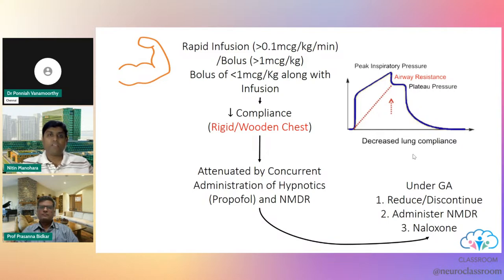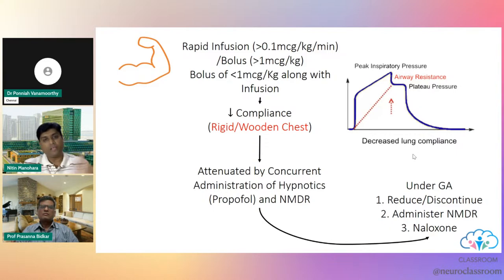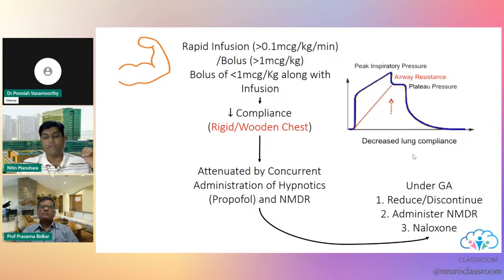One more important property: when you start remifentanil infusion and go higher, there will be a sudden wooden chest or chest rigidity, as seen with all opiates. This is very evident with remifentanil. To counter this, we start with propofol first and then add remifentanil — the reverse of the common Indian practice of starting opioid first. This way the patient does not experience chest tightness.